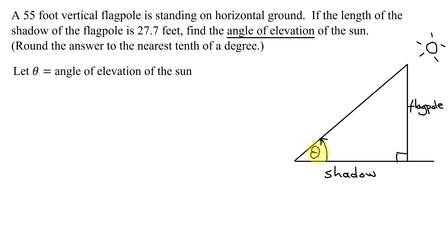So that is the angle here. Remember, that's the angle that I raise my eyes from the horizontal to look up and see the tip of the flagpole and then the sun. Now I need to put my distances on the diagram. 55 feet is the height of my flagpole, and 27.7 feet is the length of my shadow.